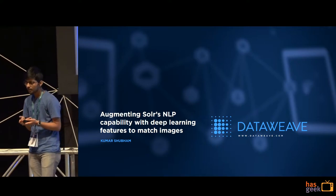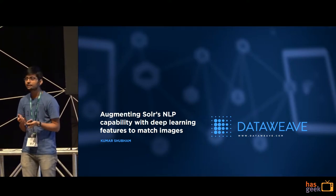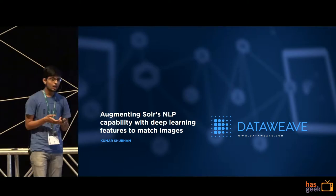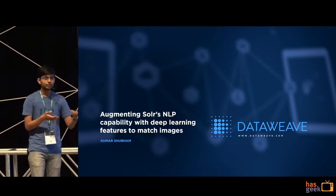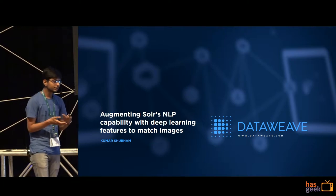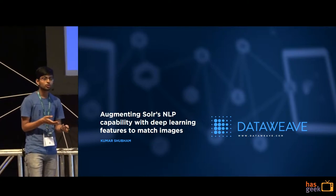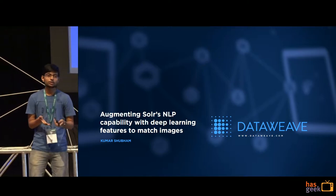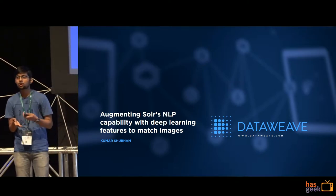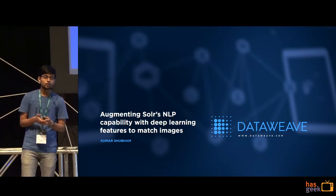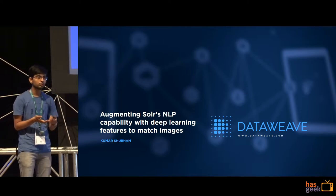Typically, text-based information like titles and descriptions are used to do product matching. But when you come to the fashion vertical, these titles and descriptions are not detailed enough to capture all sorts of variations. For example, at Myntra, you can have more than a thousand products with the name 'white check collar shirt.' So we use deep learning algorithms to do image matching in the fashion vertical.